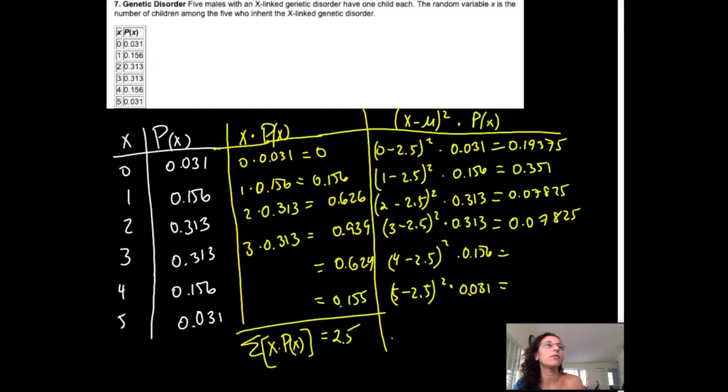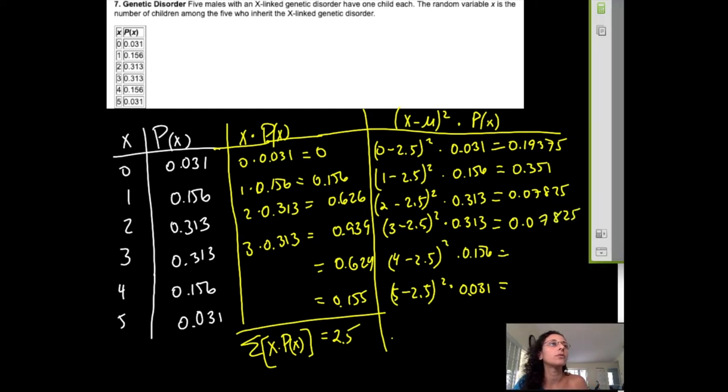Next, I might just kind of do parentheses. 3 minus 2.5, so this is another way of doing it. Close parentheses, then square it. And then times probability, 0.07825. I should have known that would be the same as the one above.